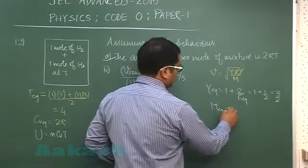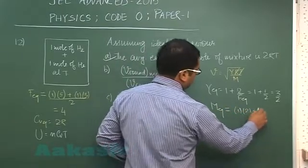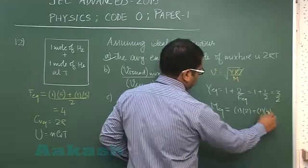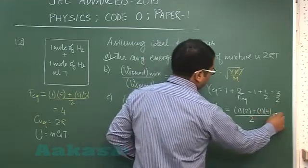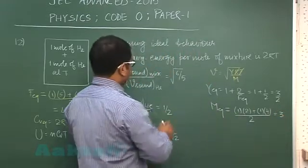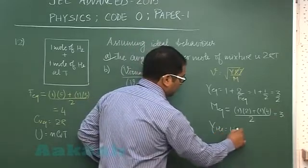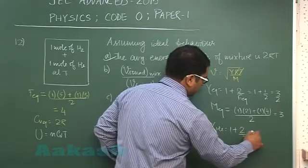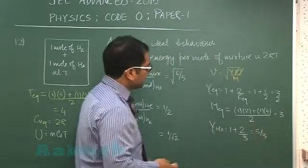M equivalent will be n1m1 plus n2m2 (this is hydrogen, this is helium) divided by n1 plus n2, that is 2. This comes out to be 3. For the case of helium, gamma helium would be 1 plus 2 by f, which is 3, so that is 5/3.